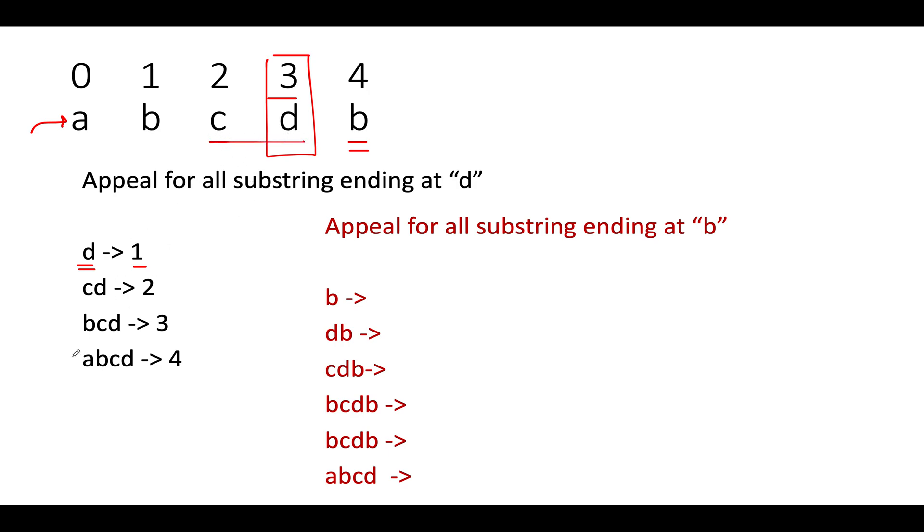Then we combine c-d together. What would be the appeal for the c-d? It would be equal to two. Then we have b-c-d; the appeal for this would be three. The appeal for a-b-c-d would be four. We have generated all possibilities for the string ending at d: for d singular it is one, for c-d it's two, for b-c-d it's three, for a-b-c-d it's four.